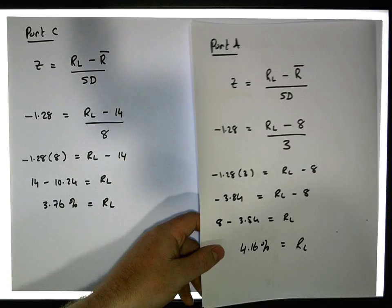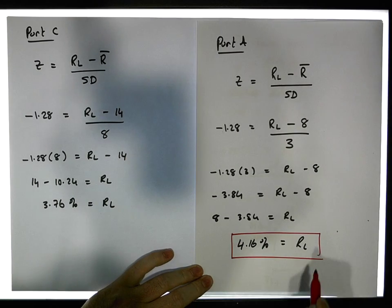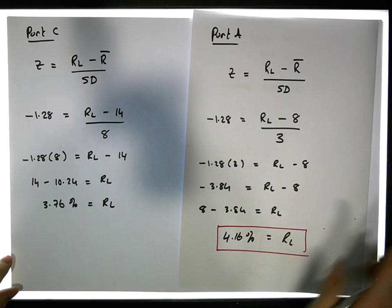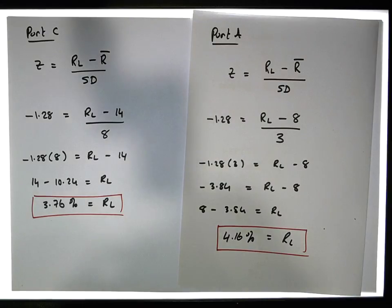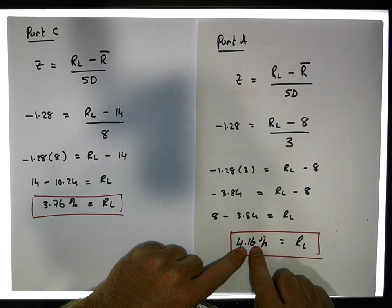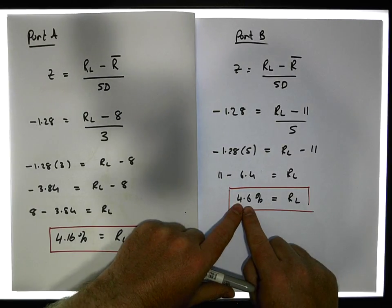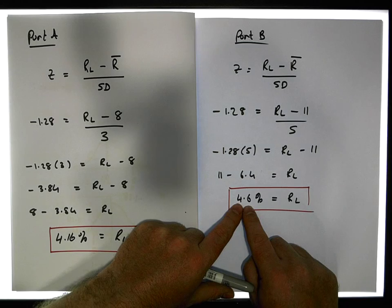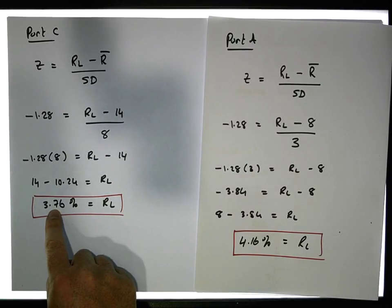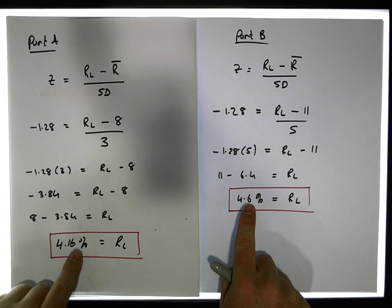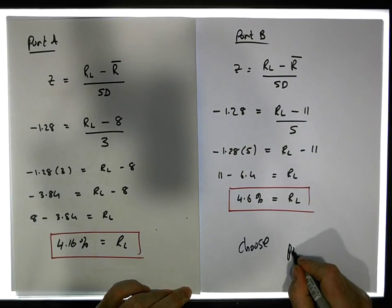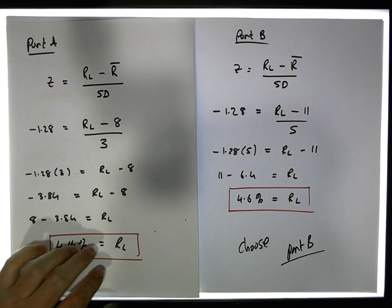Now we have our three minimum return values: 4.16% for Portfolio A, 4.6% for Portfolio B, and 3.76% for Portfolio C. We would only drop below 4.16% ten percent of the time with Portfolio A, below 4.6% ten percent of the time with Portfolio B, and below 3.76% ten percent of the time with Portfolio C. We choose the one that gives us the maximum return, which is Portfolio B.